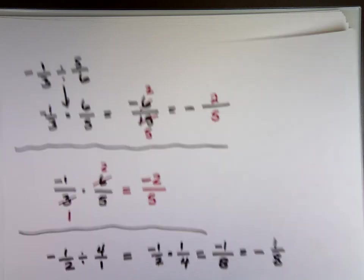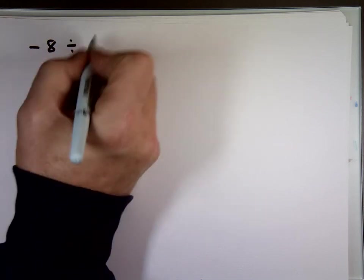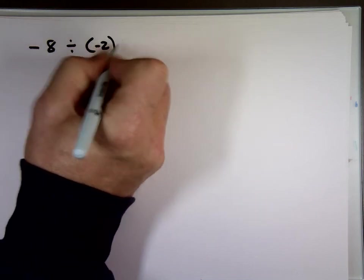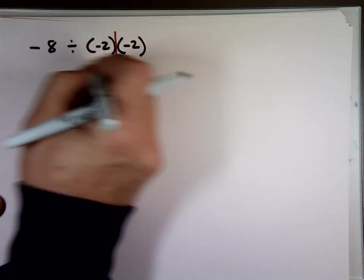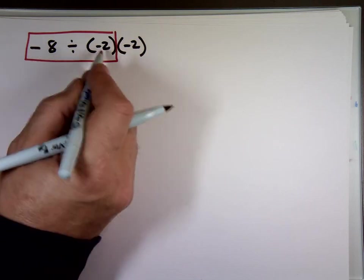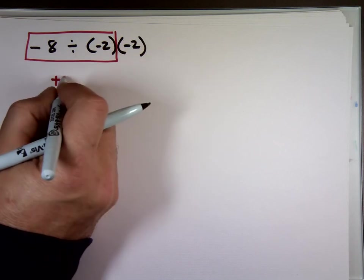One more problem. Negative eight divided by negative two times the negative two. Now, order of operations. All you see is division multiplications. So which one do you do first? Division left to right. So what do you see first? I see division. A negative divided by a negative is what? Positive. What's eight divided by two? Four. That's a plus four.